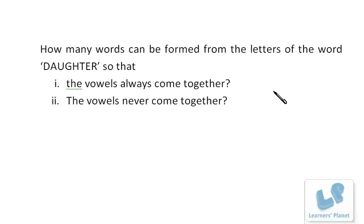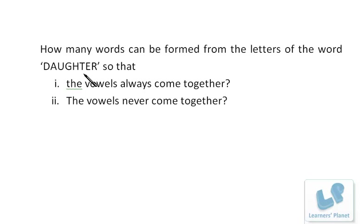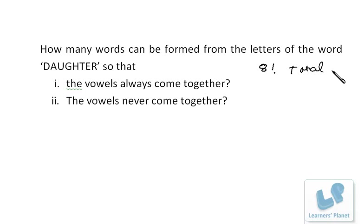Let's begin with this question to brush up the concept from the previous session. How many words can be formed from the letters of the word DAUGHTER, such that the vowels always come together (Case 1), and the vowels never come together (Case 2)? There are eight letters and there is no repetition at all, so without any condition there will be 8 factorial total words formed.